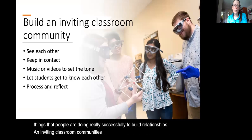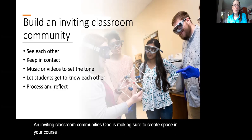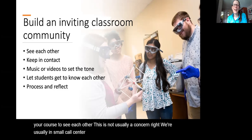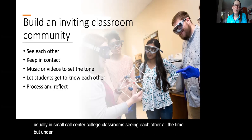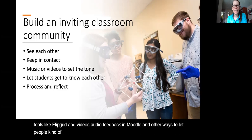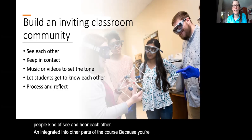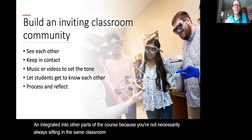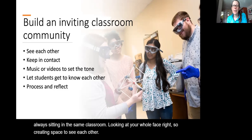One key strategy is creating space in your course for students to see each other. In small college classrooms we normally see each other all the time, but under these circumstances, tools like Flipgrid, videos, and audio feedback in Moodle let people see and hear each other integrated into other parts of the course. Creating ways to keep in contact is also important.